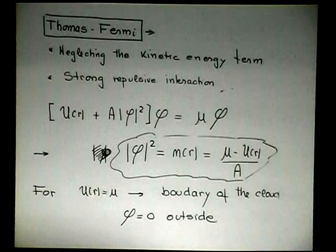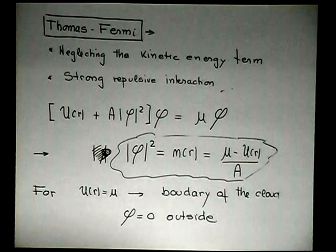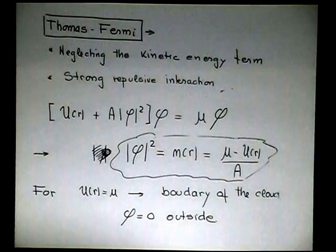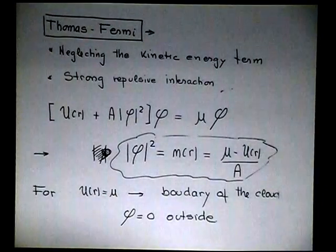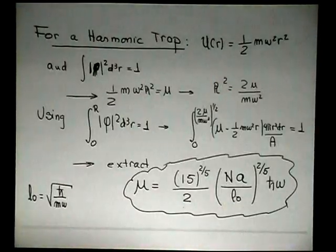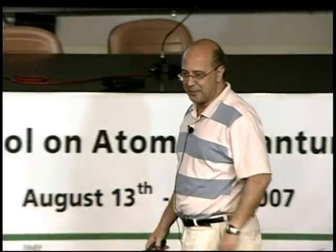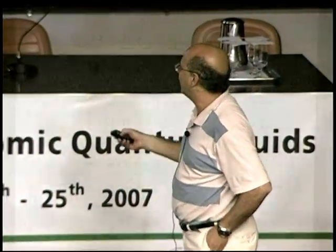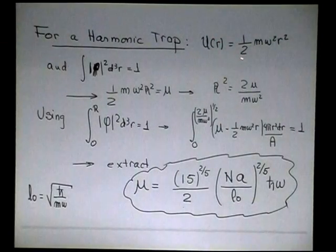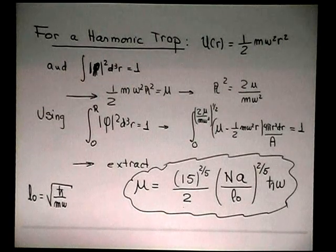There is a boundary where the particle exists. And when this is zero, which means the potential is equal to the chemical potential, you determine the boundary, the volume that particles can live in this approximation. And outside this region, the wave function is zero. So let's solve this for a harmonic trap, which is the most popular around.